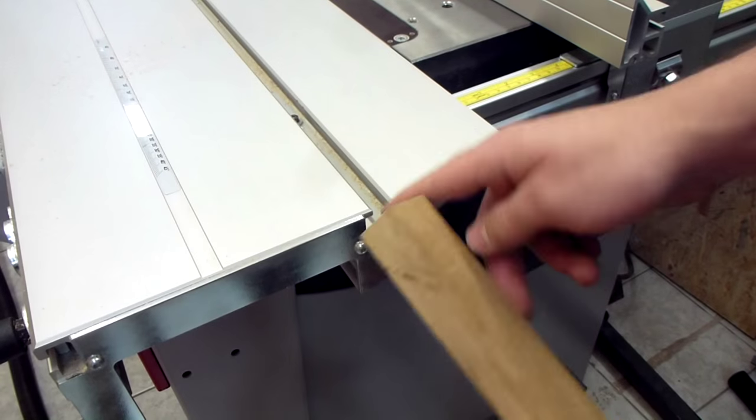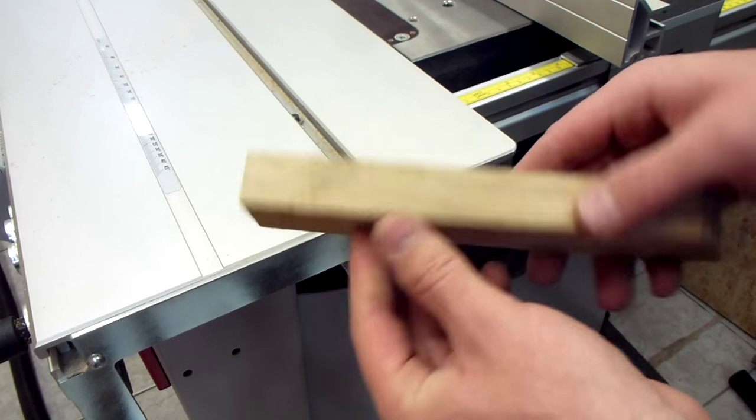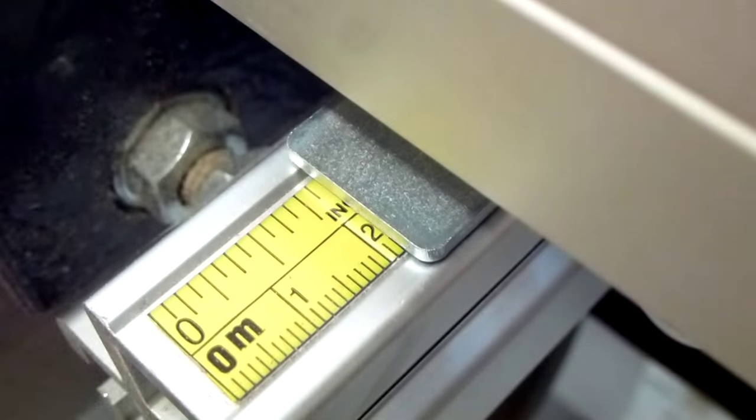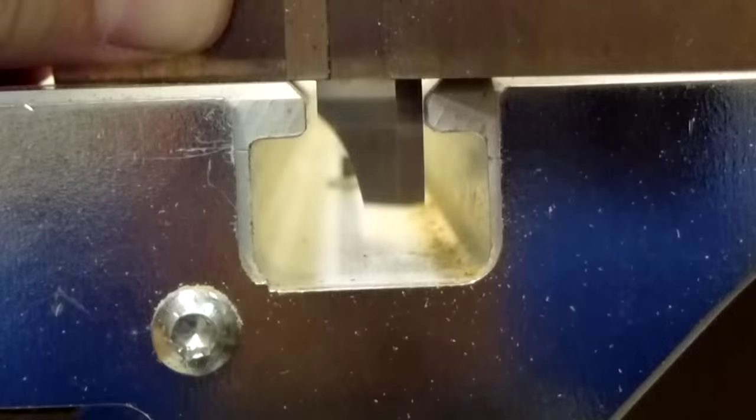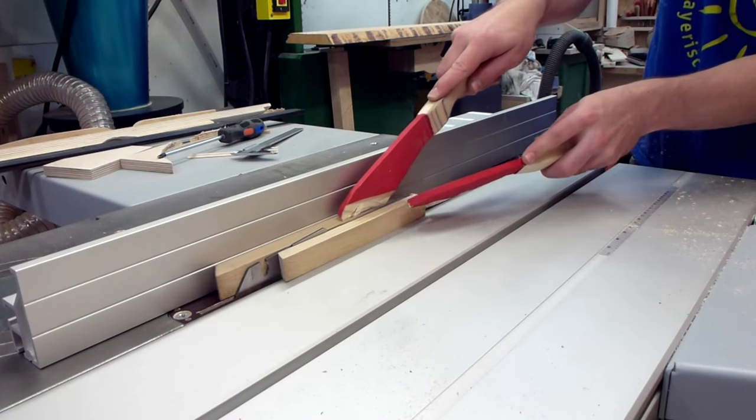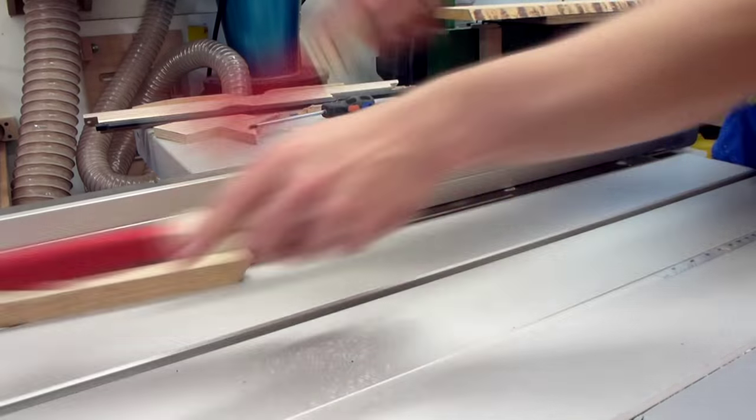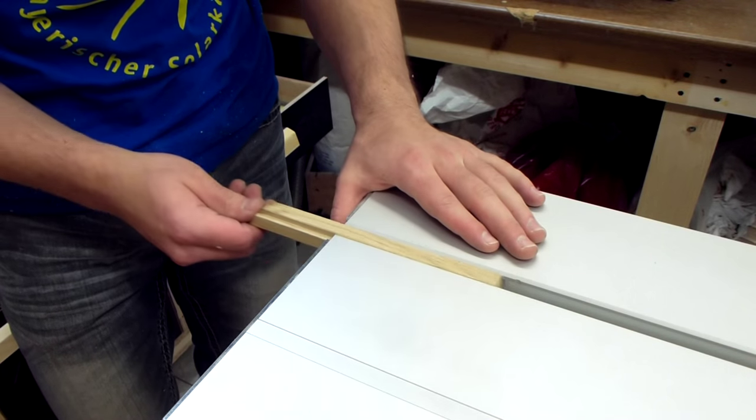The next piece I need to make is a runner for the miter slot. And I'm gonna make this out of a scrap piece of oak. I measured the slot and set the fence to a little bit less than that to give the runner a little bit of play in the slot. And then the exact same thing for the thickness. Then I made some more cuts to make it a T-shape and chamfered the edges by hand. And it fits perfectly.